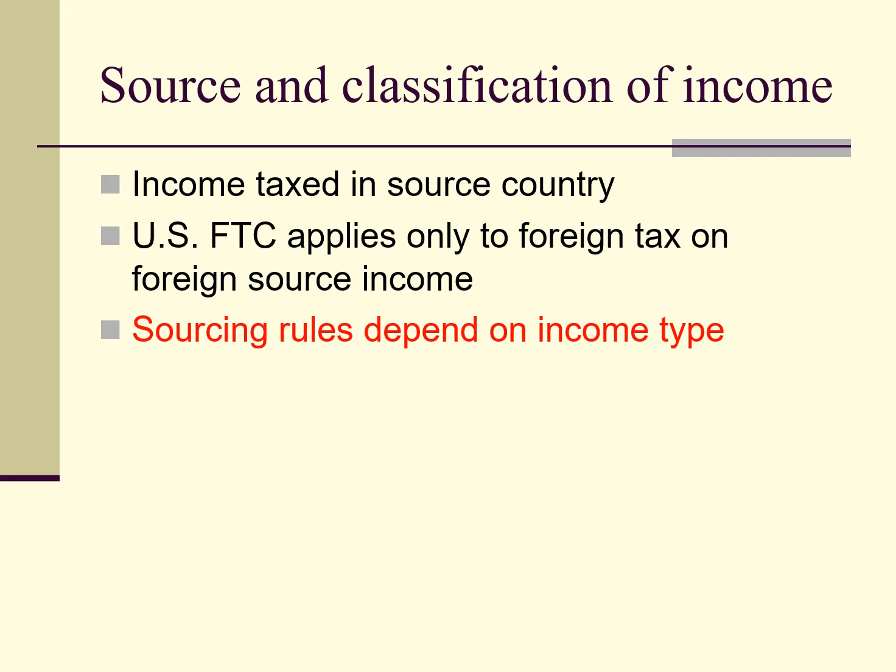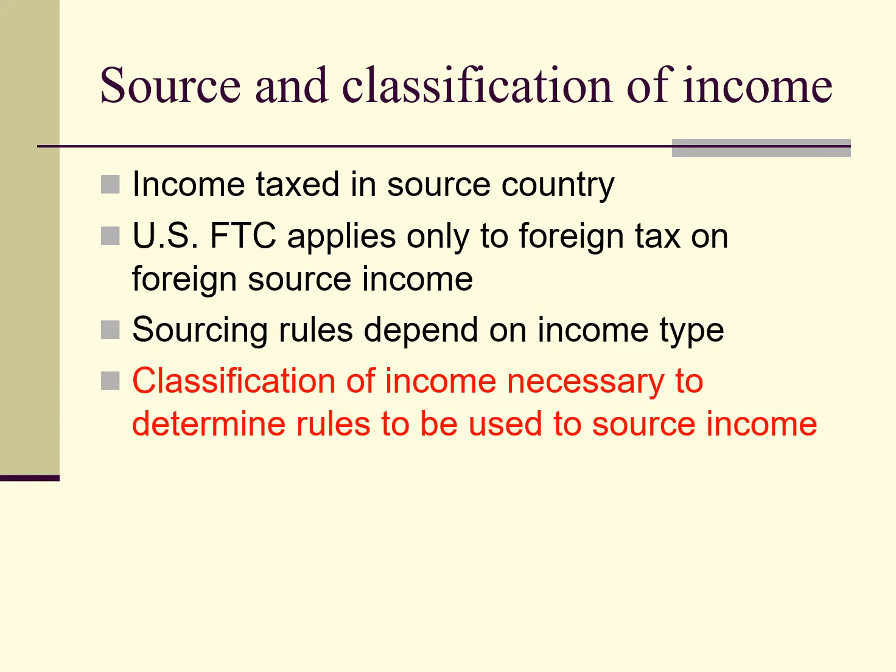The first thing to know about determining the source of income under U.S. international tax law is that different sourcing rules apply to different kinds of income. Because different sourcing rules apply to different kinds of income, in order to identify the source of income we must first identify the class of income we are dealing with, so that we know what rules to apply.